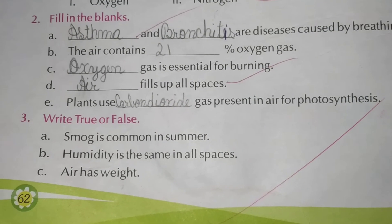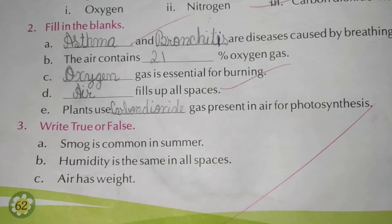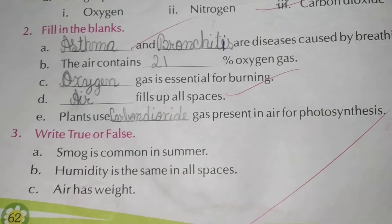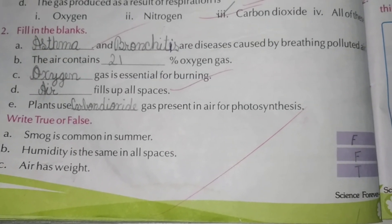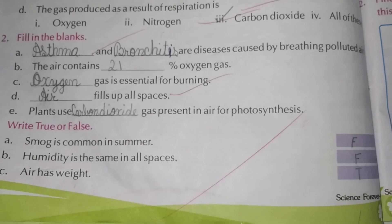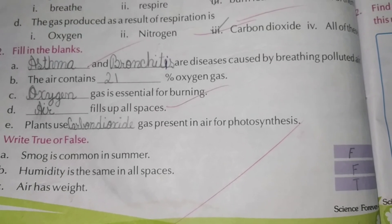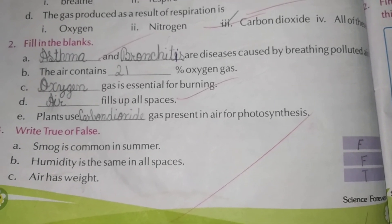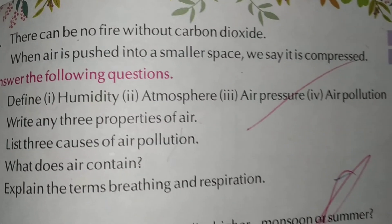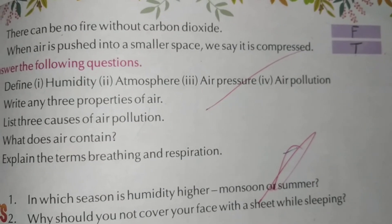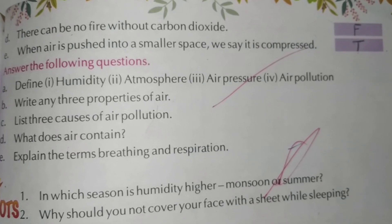Next, true or false. Number 1: Smoke is common in summer — False. Number 2: Humidity is same in all spaces — False, humidity is not same in all spaces. Number 3: Air has weight — True. Number 4: There can be no fire without carbon dioxide — False. Number 5: When air is pushed into a smaller space, we say it is compressed — True.